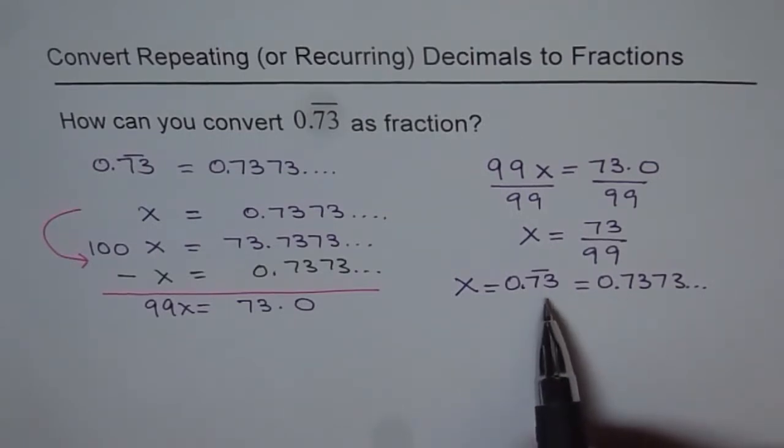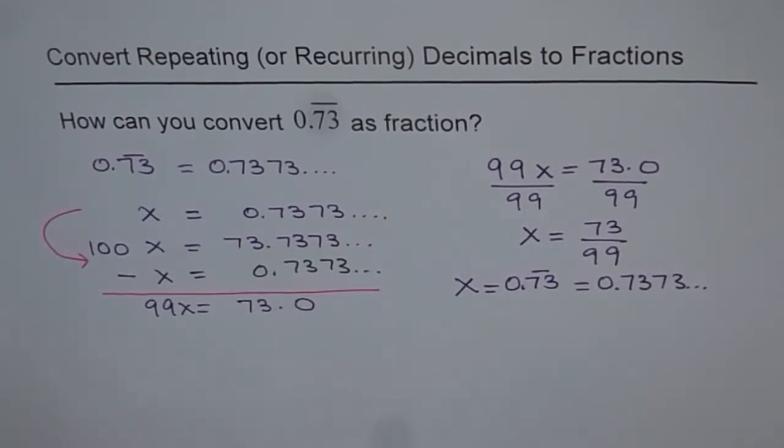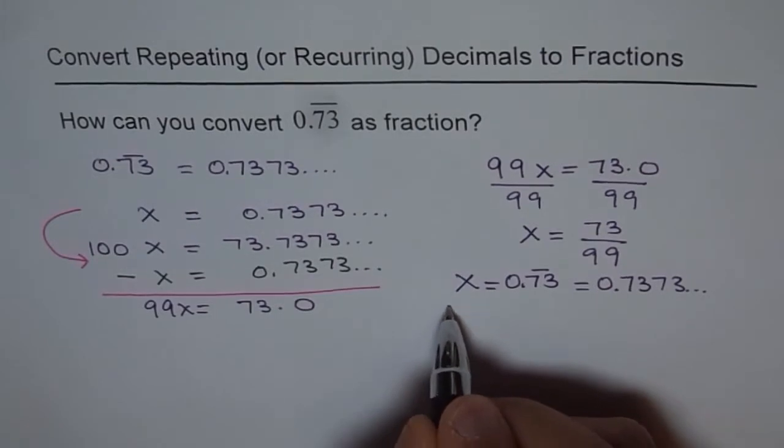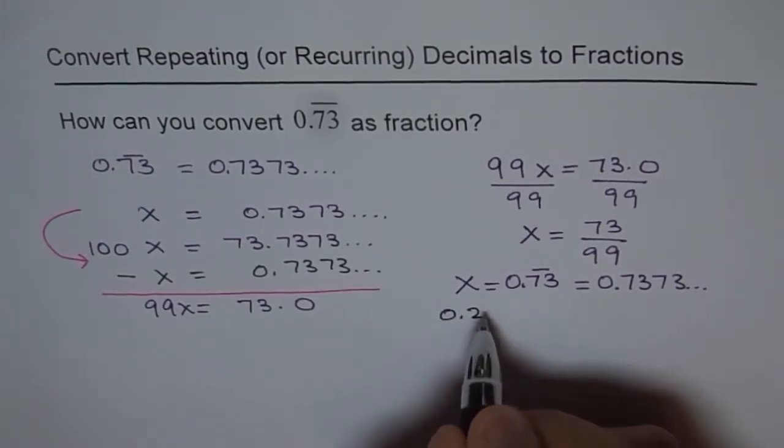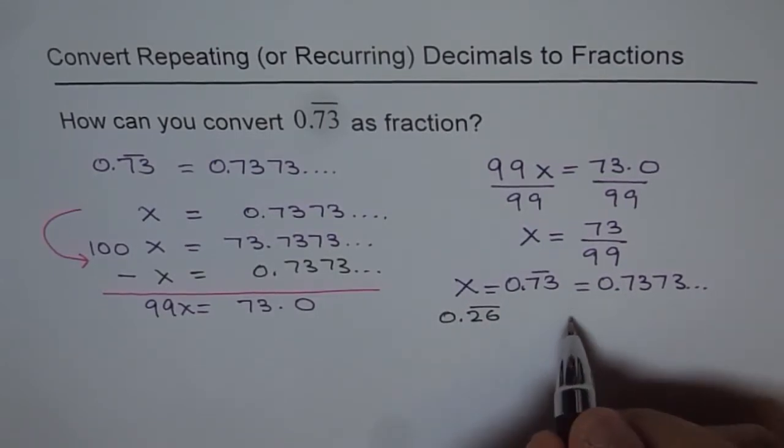So all repeating patterns can be written as fractions. All repeating or recurring decimals can be written as fractions, correct? As an exercise, let me give you some questions. For example, you write 0.26 recurring as a fraction.